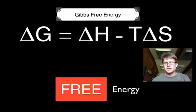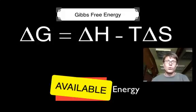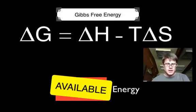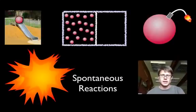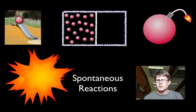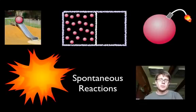The first place to start is the name itself. The word 'free' kind of gets in the way, so I'd like to go back to the old name: available energy. Let's think of delta G as available energy — energy that we can actually use to do work. The equation itself is also confusing with delta G, enthalpy, and entropy. I'm going to try to pair it down to the easiest explanation, and then we can get into more specifics later. The best place to start is to look at spontaneous reactions.